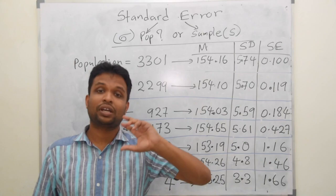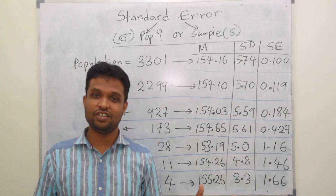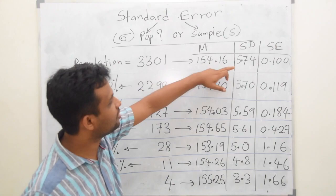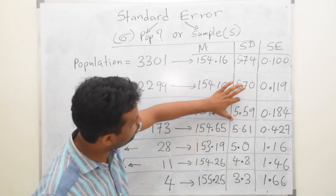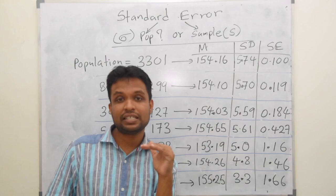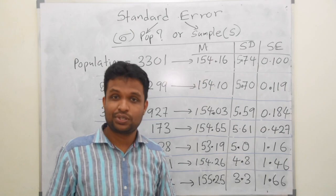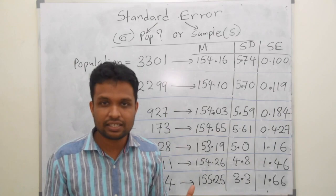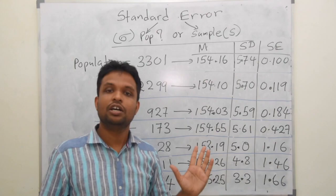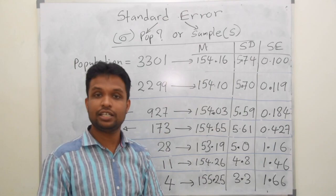Our original question was: to calculate standard error, do we use population standard deviation or sample standard deviation? What's the difference? For the total population it's 5.7, and for the samples it's 5.7, 5.5, 5.6 — no much difference. As the sample size decreases, the standard error increases, but as a researcher you can decide what level of precision you need, and from that level you can stop. That may be enough to get an idea about the population.